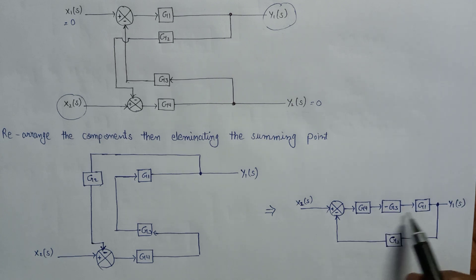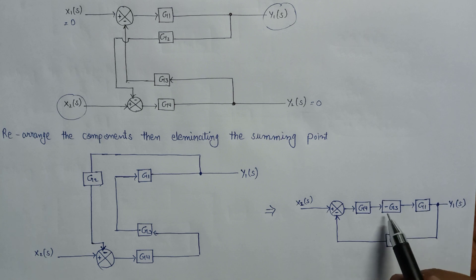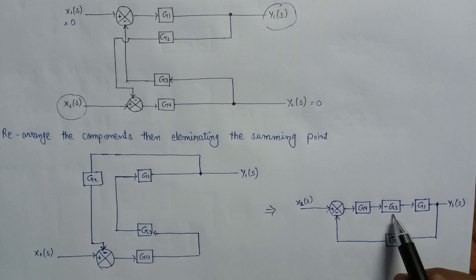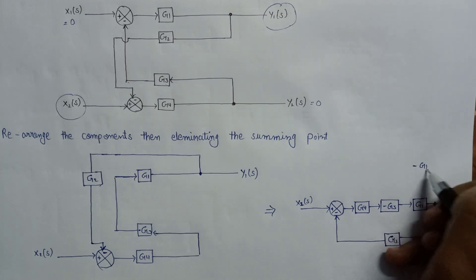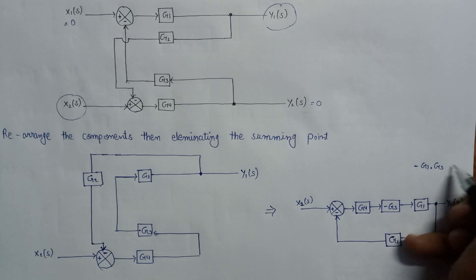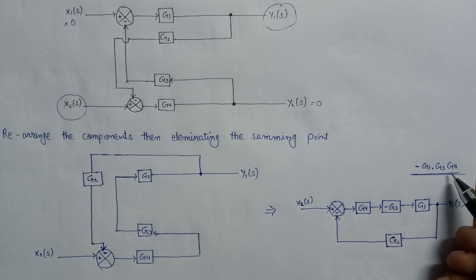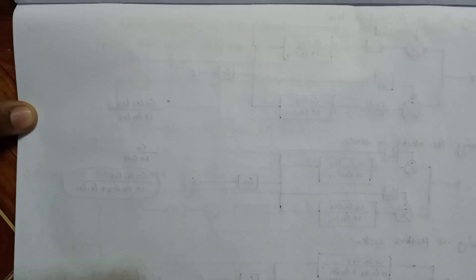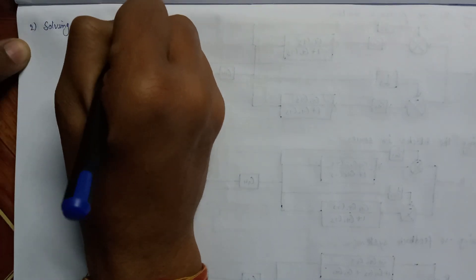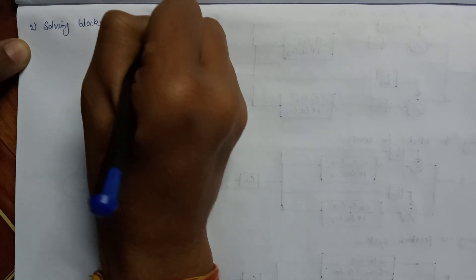Since these three blocks are in series connection, the equivalent gain is the multiplication of all their individual gains. The equivalent gain equals minus G1 · G3 · G4. Our second step is solving blocks connected in series.